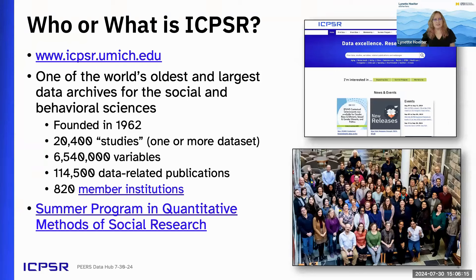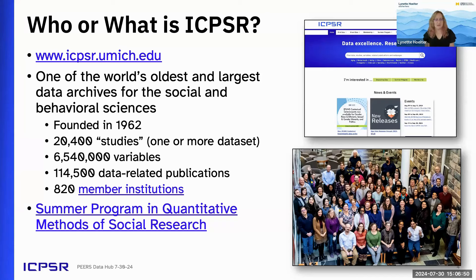If you're not familiar with ICPSR, it is one of the world's oldest and largest social and behavioral sciences data archives, and we define that pretty broadly. Last time we checked, our users covered about 50 different disciplines. Don't let the fact that we have social and behavioral sciences in our title make you think that there isn't data for education research — we do have quite a bit of data across all disciplines and education is definitely well represented.